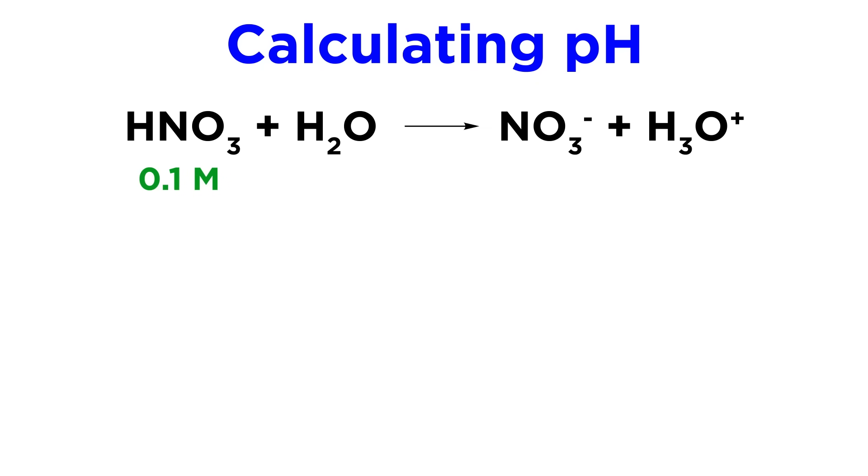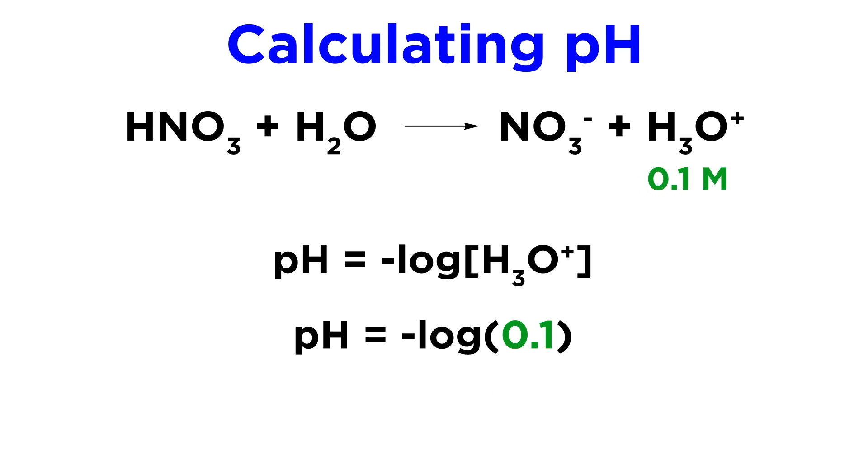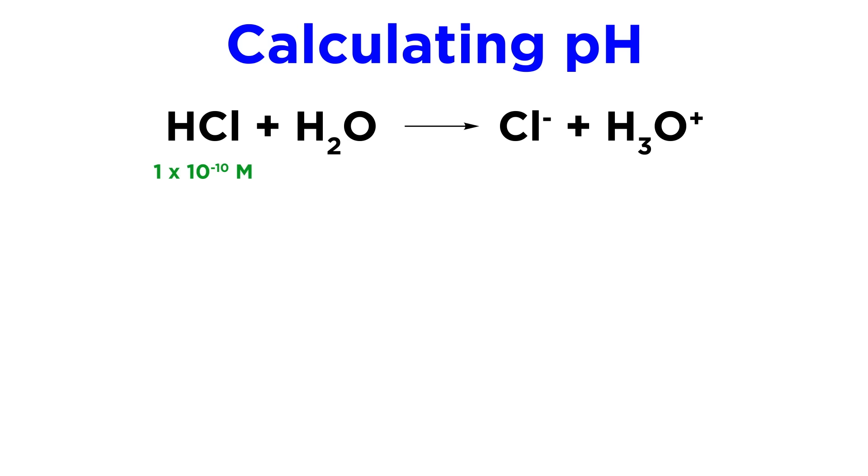Now let's say we have a 0.1 molar solution of nitric acid. What will be the pH here? This is also a strong acid, so we can assume that this is the hydronium concentration. Again, we take the negative log and we get one. So the pH of a 0.1 molar nitric acid solution is one.